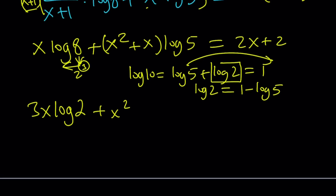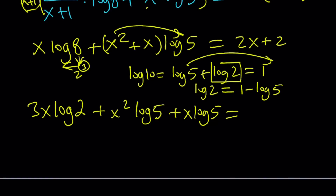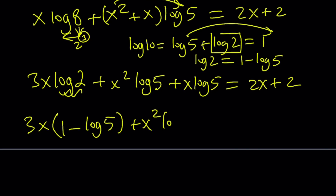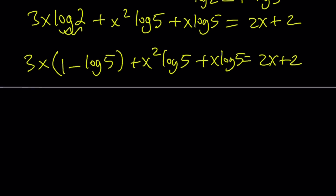So let's go ahead and do it in the next step: plus x squared log 5 — distributing — plus x log 5 equals 2x plus 2. What I'm going to do next is put these expressions together, replacing log 2 with 1 minus log 5, then distribute and rearrange the terms to make it look like a quadratic.